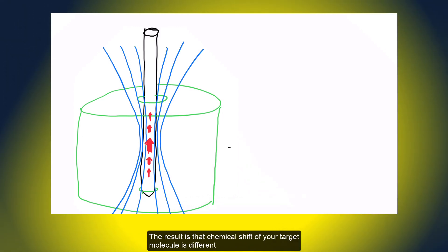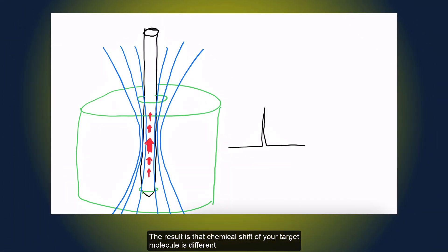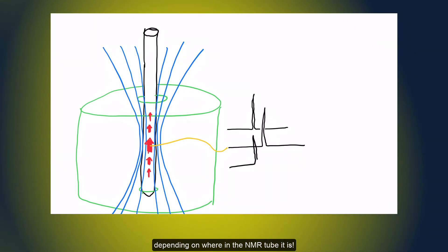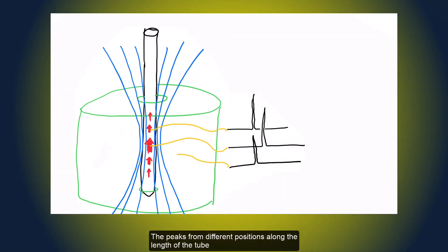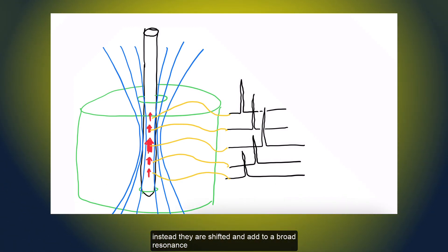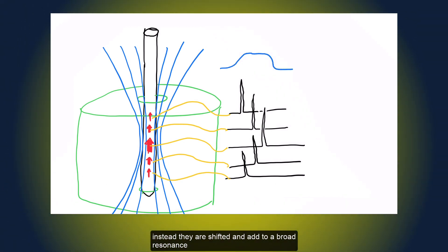The result is that chemical shift of your target molecule is different depending on where in the NMR tube it is. The peaks from different positions along the length of the tube do not come up at the same ppm position in the spectrum. Instead, they are shifted and add to a broad resonance.